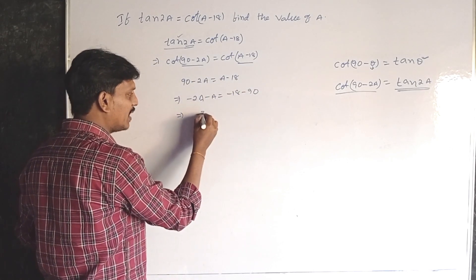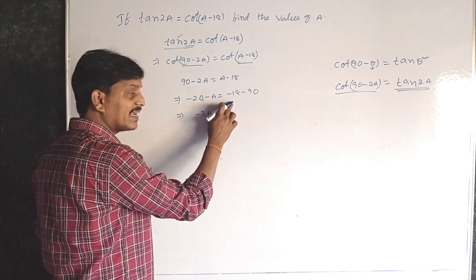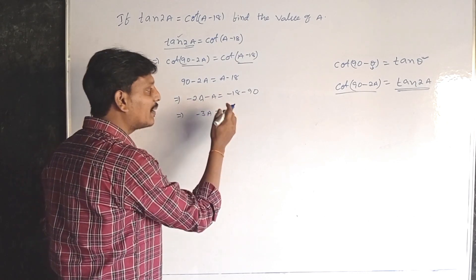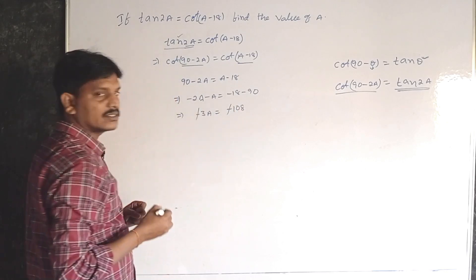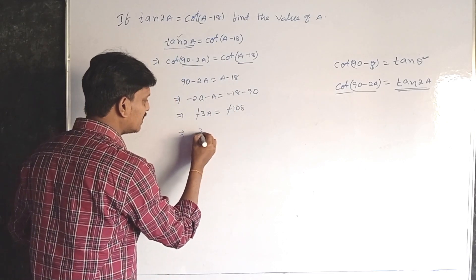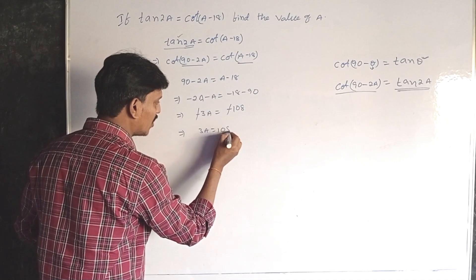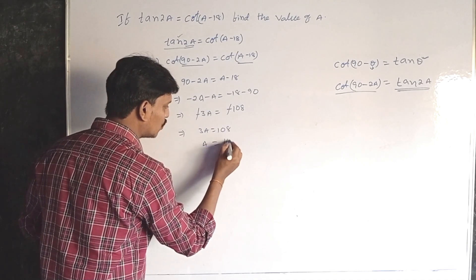Minus 2a minus a will be minus 3a. Minus 18 minus 90, very good, minus 108. Now minus minus will cancel and 3a is equal to 108.